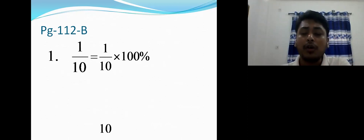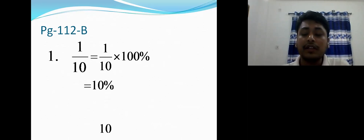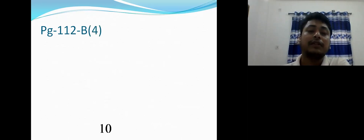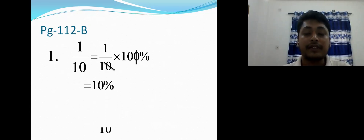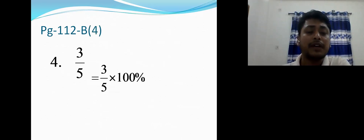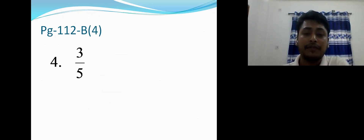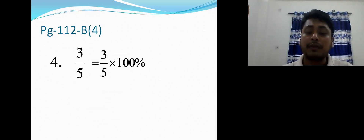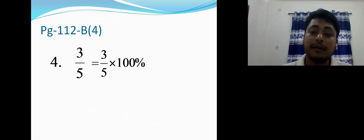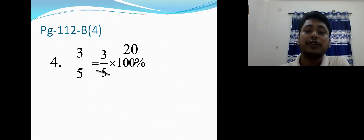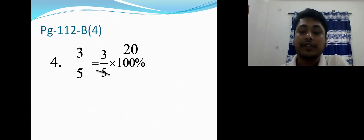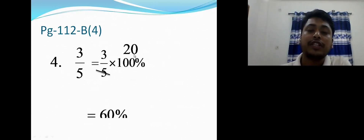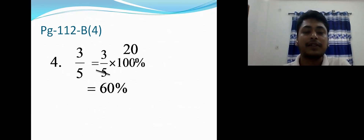For 1/10 × 100%: cancel the zeros — 10 and 10 cancel, giving 10 percent. Don't forget to write the percent sign. The answer is 10 percent. Now for 3/5: multiply by 100 percent. Five goes into 100 twenty times, so multiply 3 by 20 to get 60 percent.